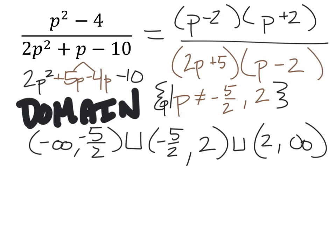Now some of you may be asking, well, why didn't we cancel out p minus 2 right here? That's because if we went back to the original equation and put 2 in for p, it would still be undefined because it would be dividing by zero, even though the numerator itself also would be zero.